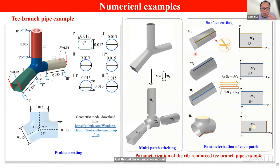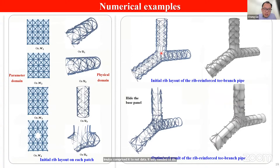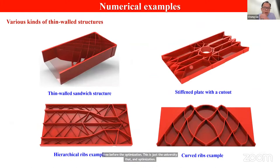This example shows a T-branch pipe structure, which also requires multi-patch parameterization. Although the parameterization process seems complex, it should be noted that it only needs to be done once before the optimization. This slide shows the initial data and the optimization result of this example.